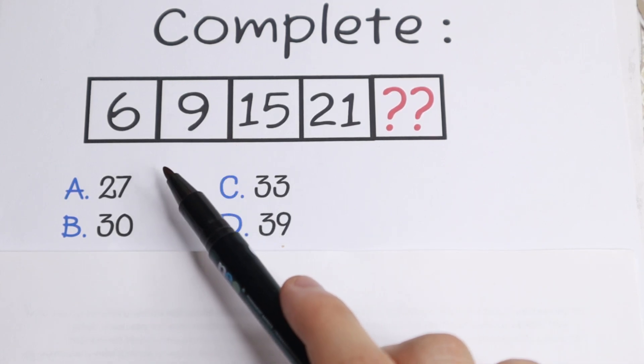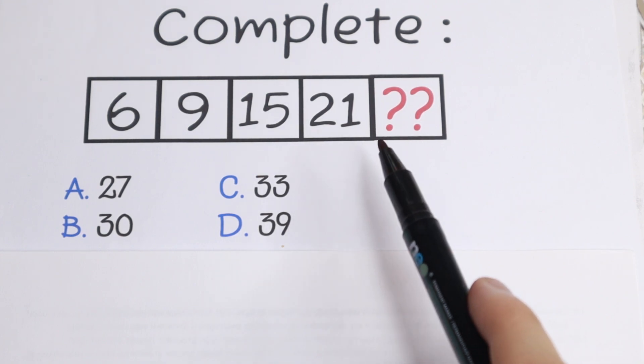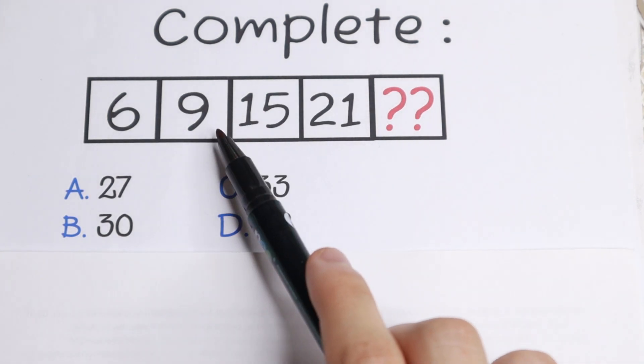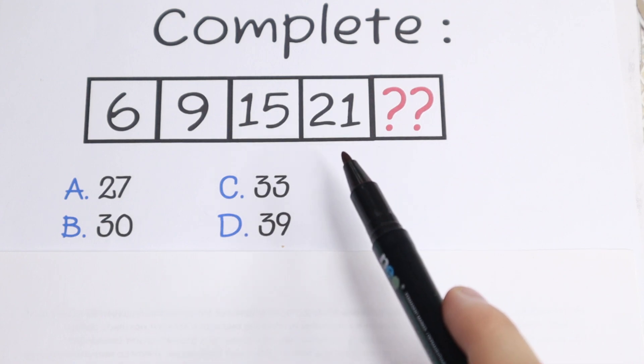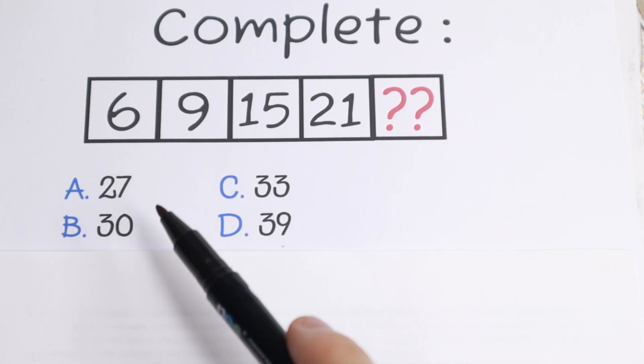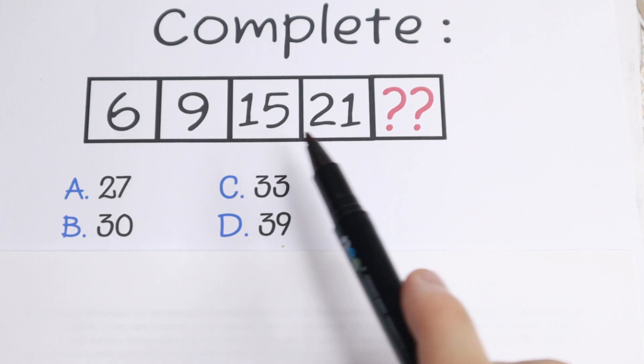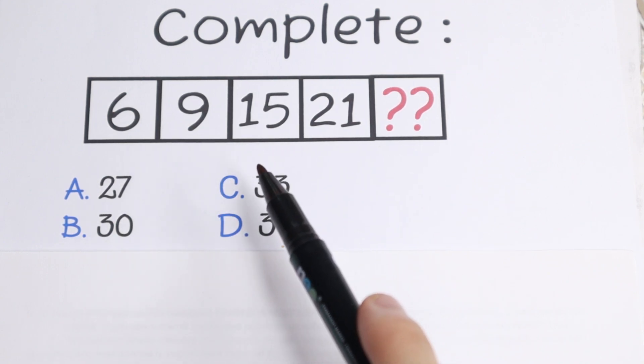Okay, we have a lot of numbers: 6, 9, 15, 21. On first glance, all numbers are odd. We have 9, 15, 21 are odd numbers. But right here we have 6, an even number. So it's not an even-odd pattern. There is no pattern between even and odd numbers.